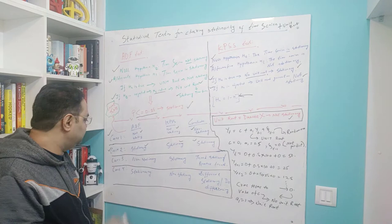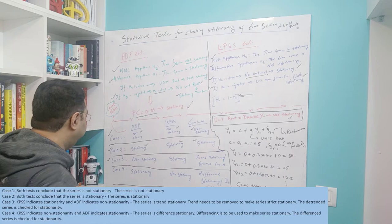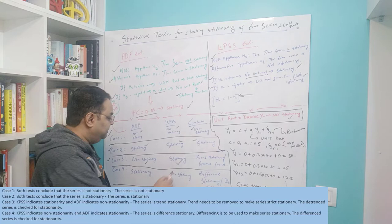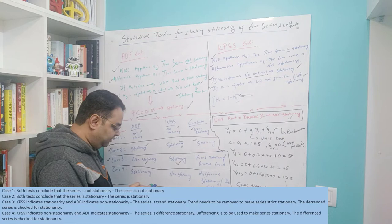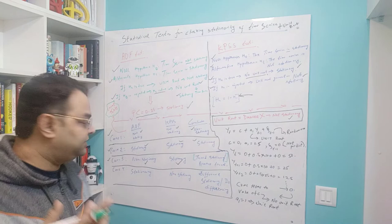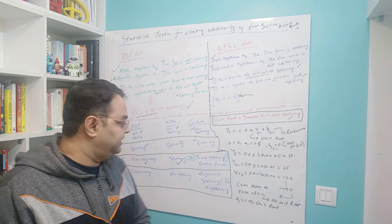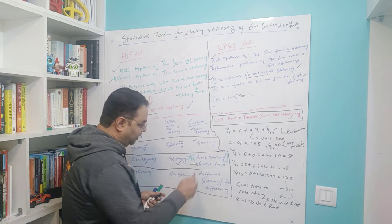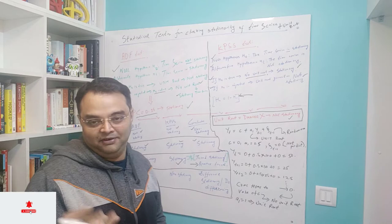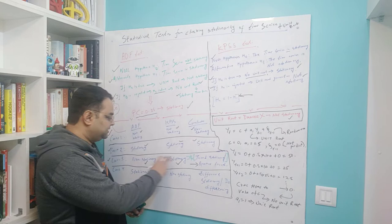The problem comes when the two tests do not agree — that's our third and fourth cases. In case three, ADF says the time series is not stationary and KPSS says it is stationary. This condition is called trend stationary. When ADF says non-stationary and KPSS says stationary, your time series is probably trend stationary, and what you need to do is remove the trend.